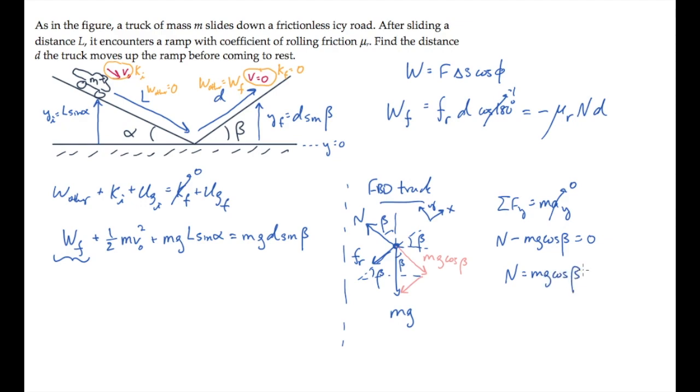We can substitute that into our expression above. Now that we have an expression for the work done by friction, we can substitute it into the work energy equation. Before I do that, notice that the mass is going to cancel from every term. So let me go ahead and do that, giving this expression.